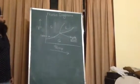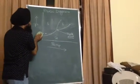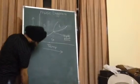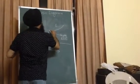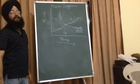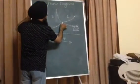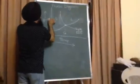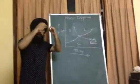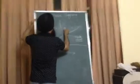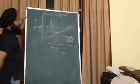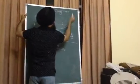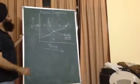Now we are going to discuss the phase diagram of water. The major difference between the phase diagram of carbon dioxide and water is that the line separating the solid and liquid regions has a negative slope in the case of water. The second major difference is that the triple point of water exists at a pressure well below one atmosphere. So at atmospheric pressure, as you increase the temperature, the solid phase changes into the liquid phase, and on further increasing the temperature, the liquid phase changes to the gaseous phase.